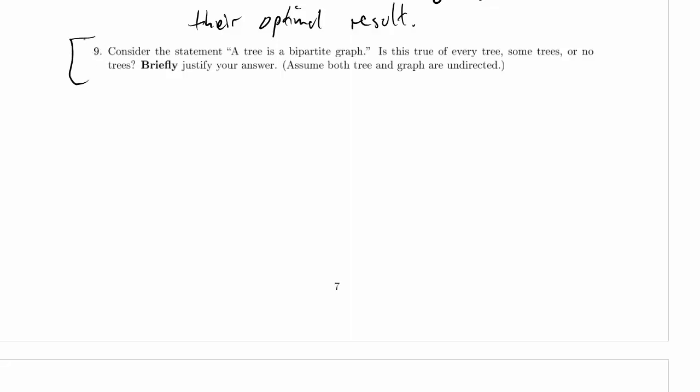We are working on part nine of problem three in the practice exam. Consider the statement: a tree is a bipartite graph. Is this true of every tree, some trees, or no trees? Briefly justify your answer. And it does say to assume that both the trees and the graph are undirected.